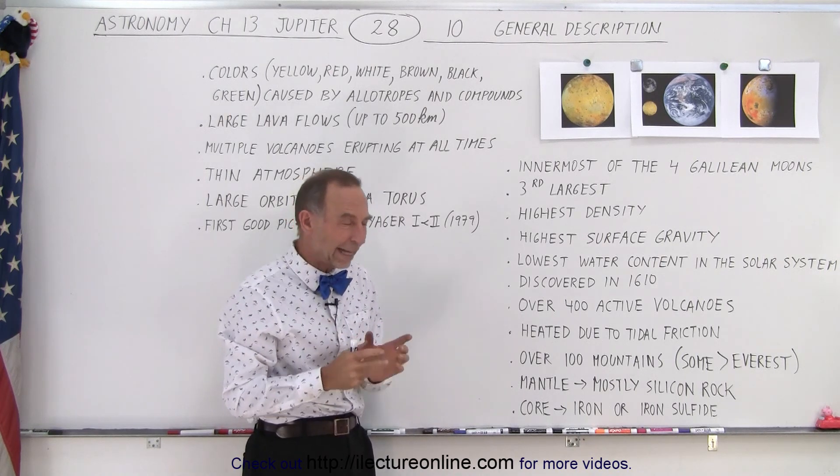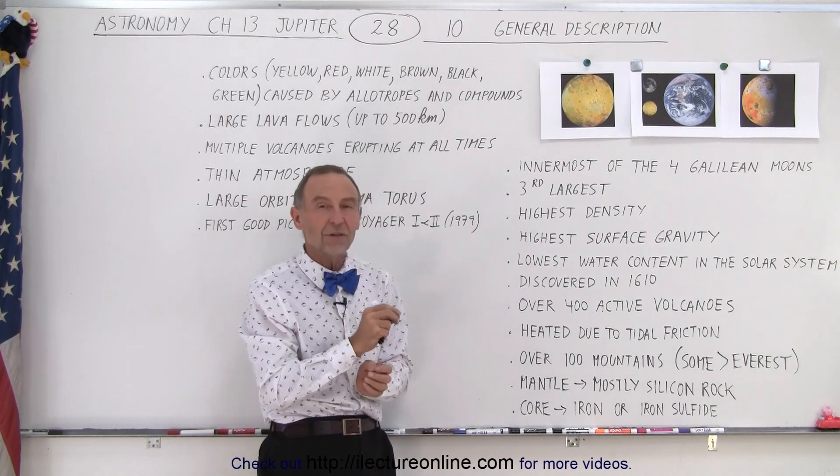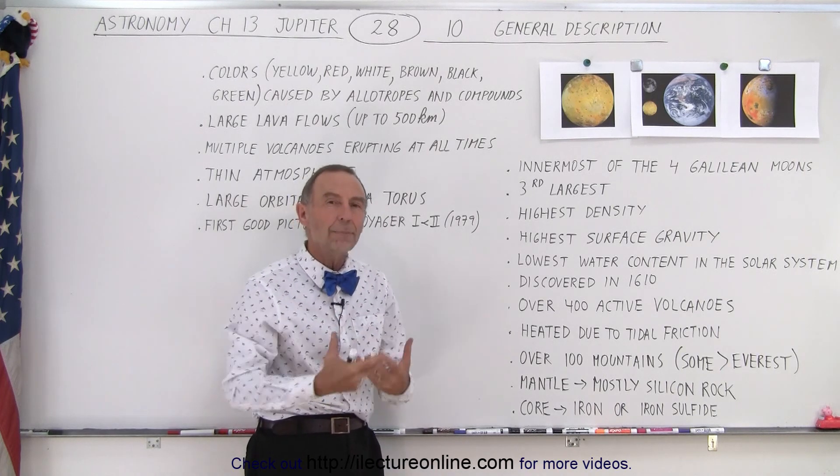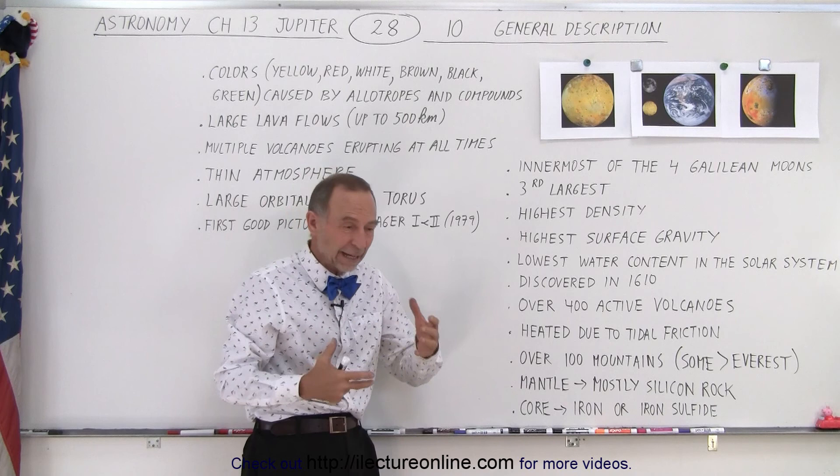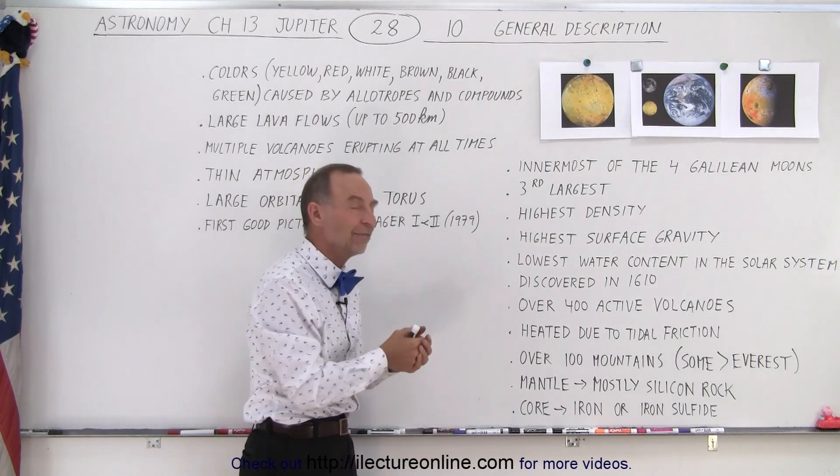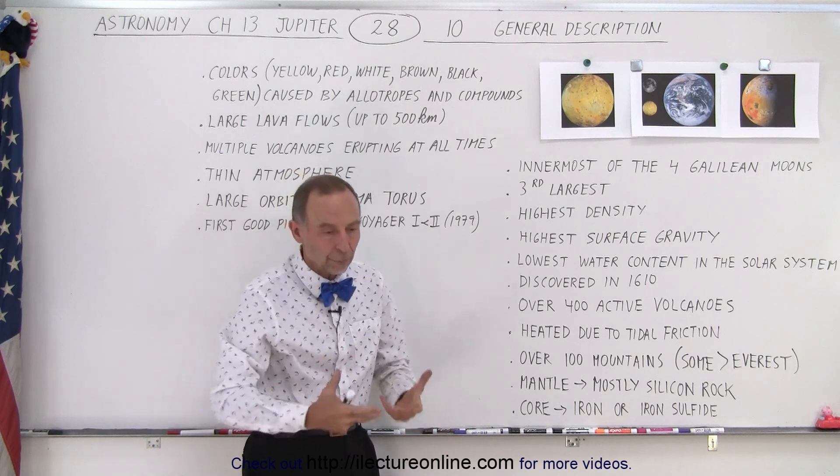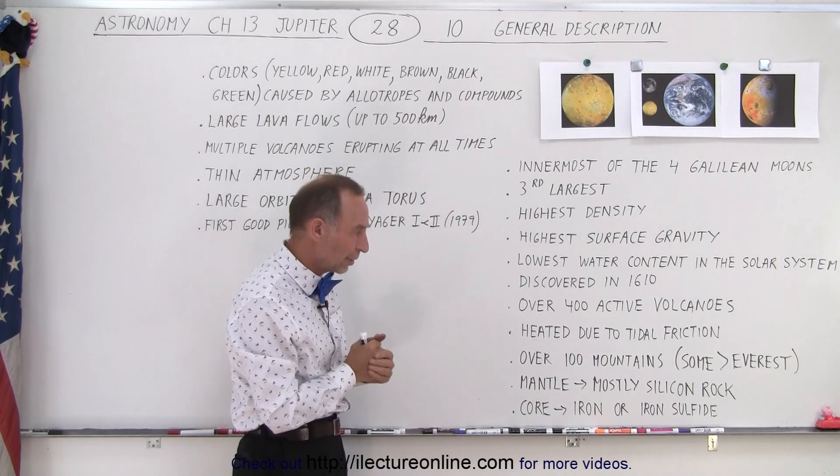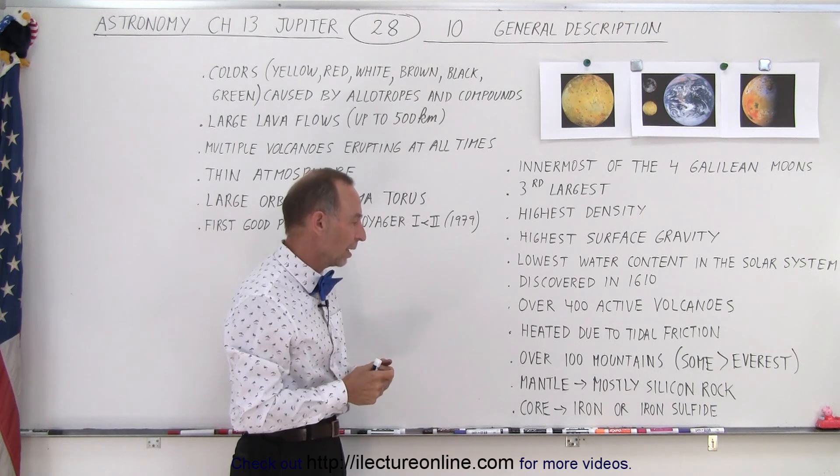And what's interesting is that those mountains are not due to the volcanic activity, but due to uplifting. The same kind of activity that causes Earth to have mountain ranges. The same kind of activity is happening on Io, pushing them up and folding them. And therefore, we have over 100 noteworthy mountains on that moon.